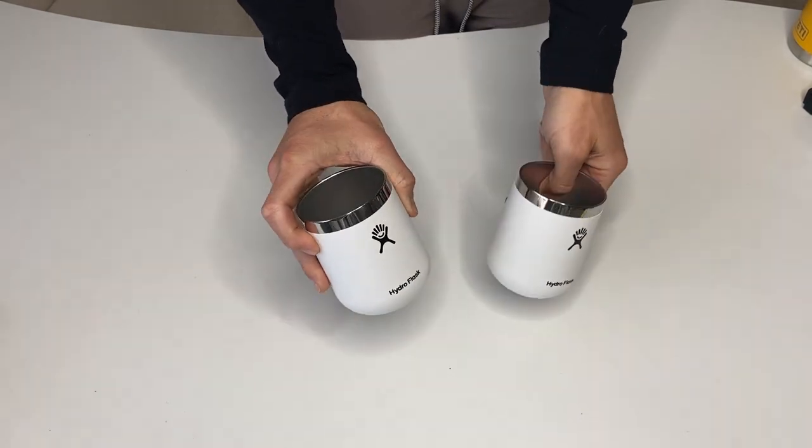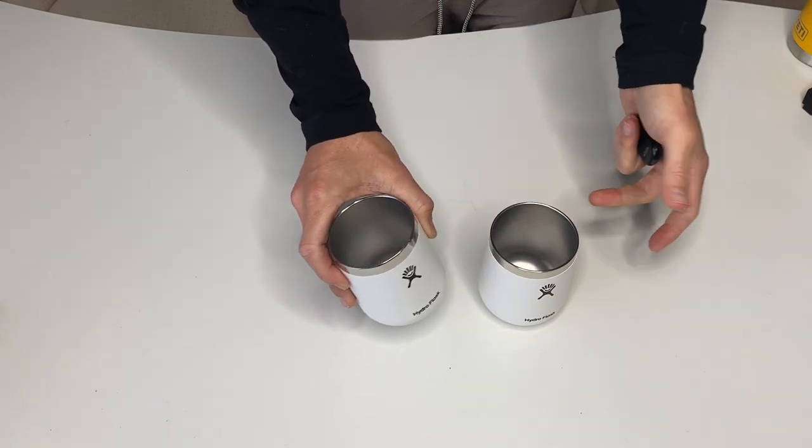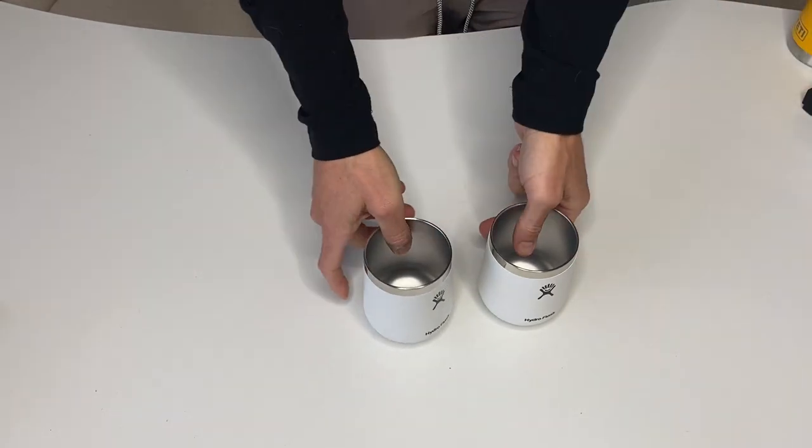We just use white for the wine tumbler, but we also have the Hydro Flask wide mouth and all that kind of stuff. We love Hydro Flask.